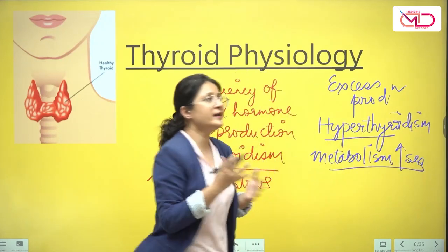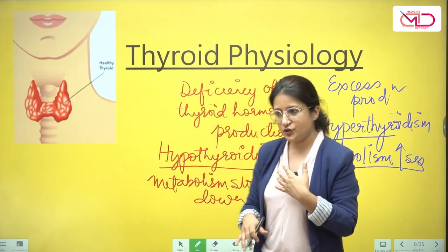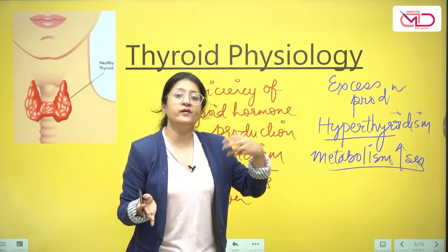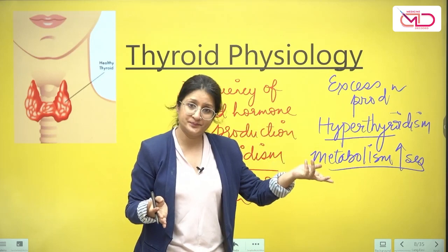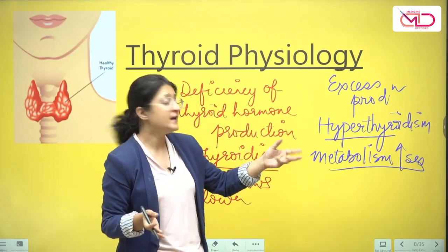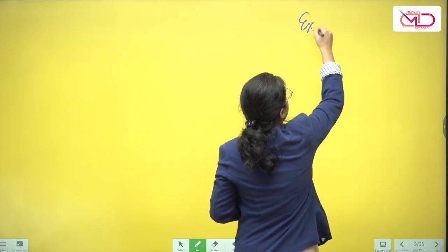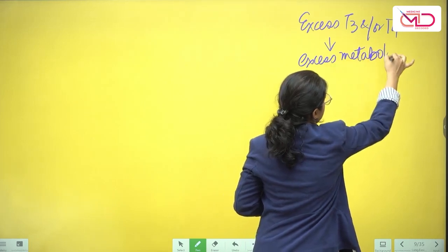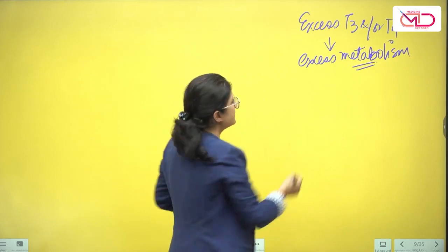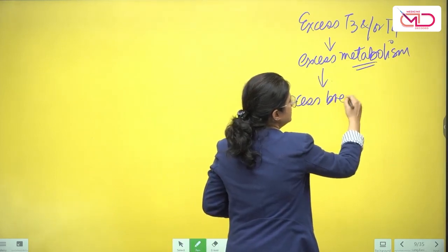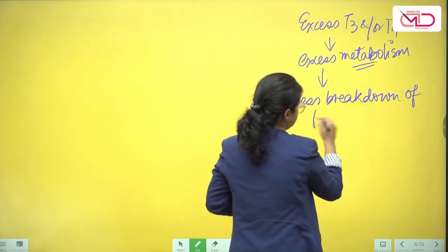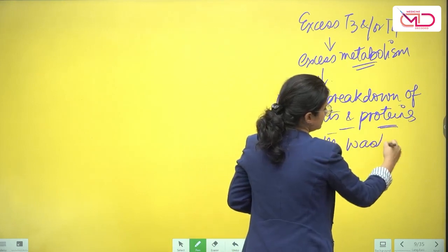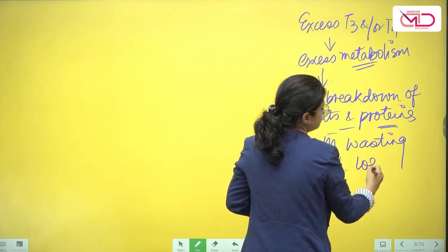Our body maintains a balance between energy requirement and energy production — our basal metabolic rate. When hormone production is excessive, we are over-metabolizing, generating more calories than are actually needed. Excess T3 and/or T4 leads to excess metabolism — excess breakdown of fats and proteins, muscle wasting, and weight loss.